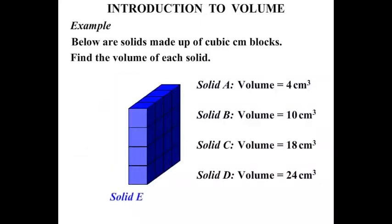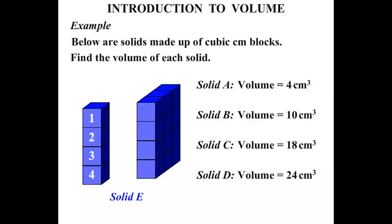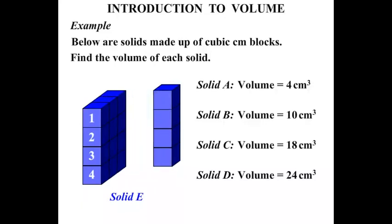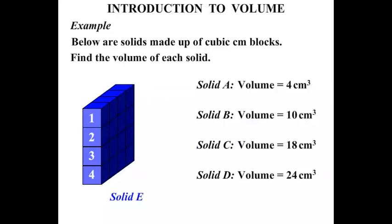Solid E, a skinnier one this time. 1, 2, 3, 4. The front layer there has 4. Let's move it across. There's another layer there, and another, and another. So we had 4 layers. We have 4 lots of 4, and 4 4s are 16. So solid E has a volume equal to 16 cm³.